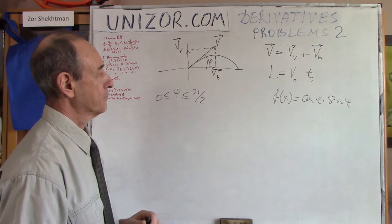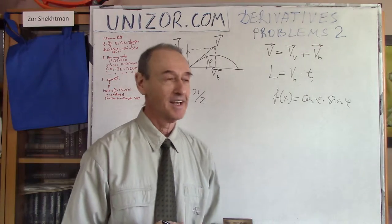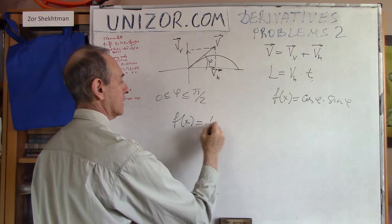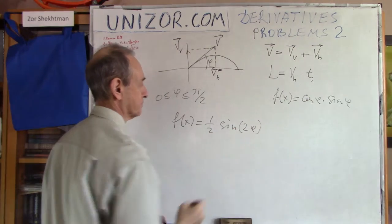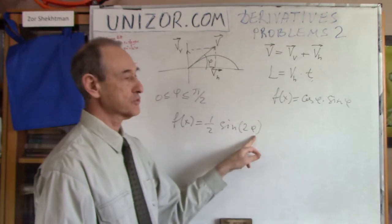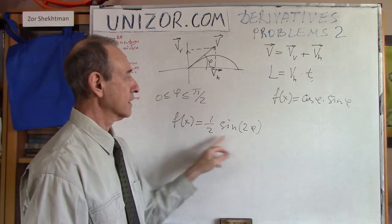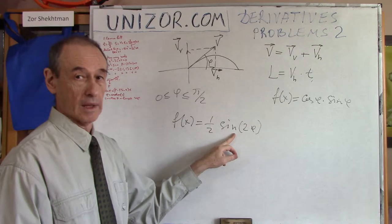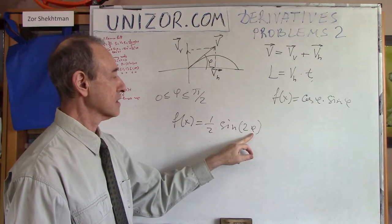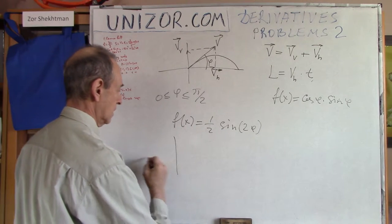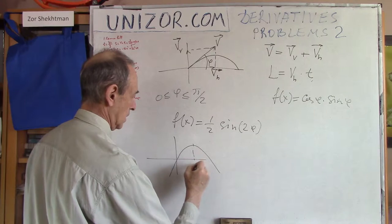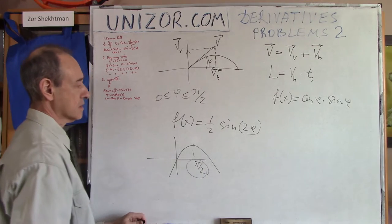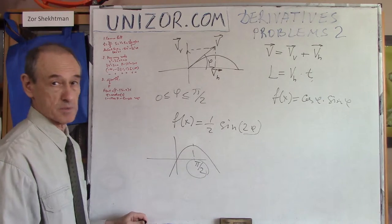If I'm smart enough, I notice that cosine(phi) times sine(phi) is one-half of sine(2*phi), using the double-angle formula: sine(2*phi) = 2*sine*cosine. Since the sine function reaches its maximum of 1 at pi over 2, we get 2*phi = pi/2, so phi = pi/4 — as expected.